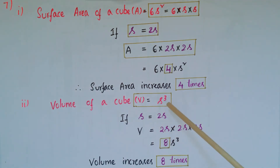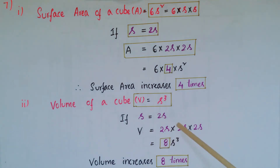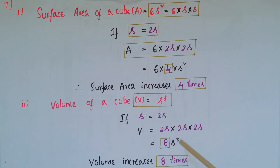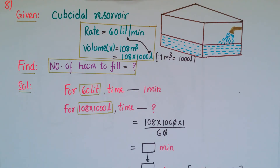The volume of a cube is equal to s cube. Here s is equal to 2s, so the volume becomes 2s into 2s into 2s, which equals 8s cube. So the volume increases 8 times if each edge of the cube is doubled.